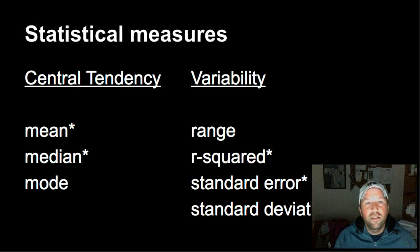So in terms of statistical measures, there are basically three big measures of central tendency: mean, median, and mode. And in terms of variability, there are lots and lots of statistical measures, but some of the more common are range, r-squared, standard error, and standard deviation. Now, I've put an asterisk by the measures that are most likely to be useful in biology class.